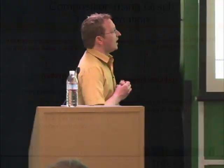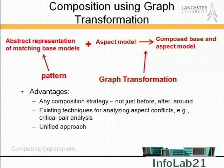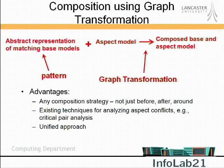The conclusion we came to is that aspect composition is really just another type of model transformation. So why not use existing technologies developed for model transformation? At a simple level, we view aspect composition as a layer on top of graph transformations. In graph transformations, you specify a pattern capturing points in a base artifact where you want to modify, and then write a rule that adds or deletes elements. So an aspect is a graph rule — what you normally think of as the point cut is the left-hand side pattern, and the advice is what you introduce on the right-hand side.